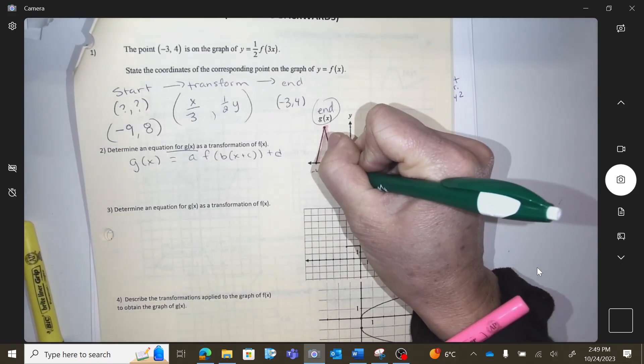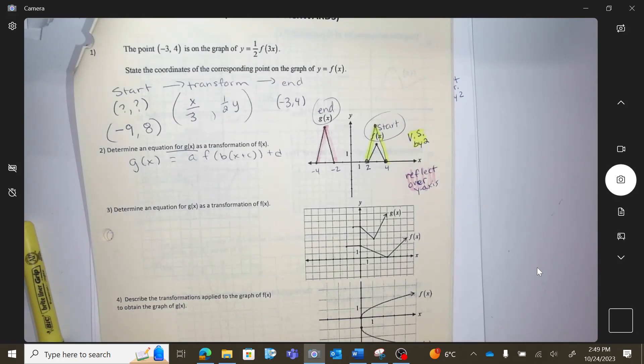So if we take the yellow graph and reflect it over the y-axis, it would look exactly like that because this is a two and a four. Now this is a negative two, negative, right?